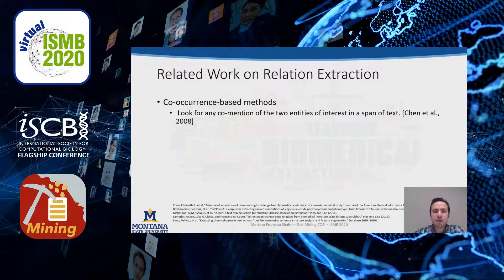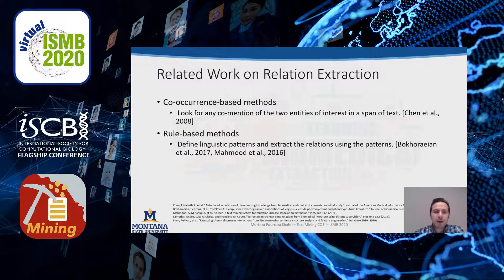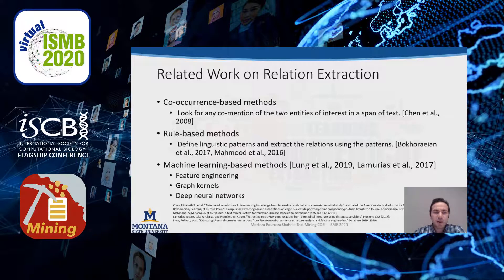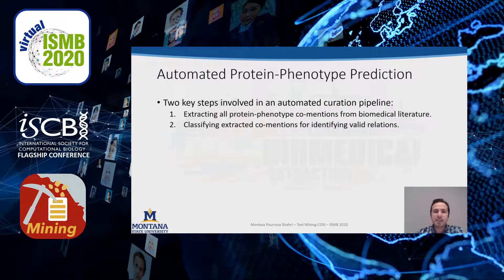Relation extraction from biomedical literature can be done by co-occurrence-based methods that look for any co-mention of two entities of interest in a span of text, or by rule-based methods that define linguistic patterns, or by machine learning-based methods including feature engineering, graph kernels, or deep neural network models.